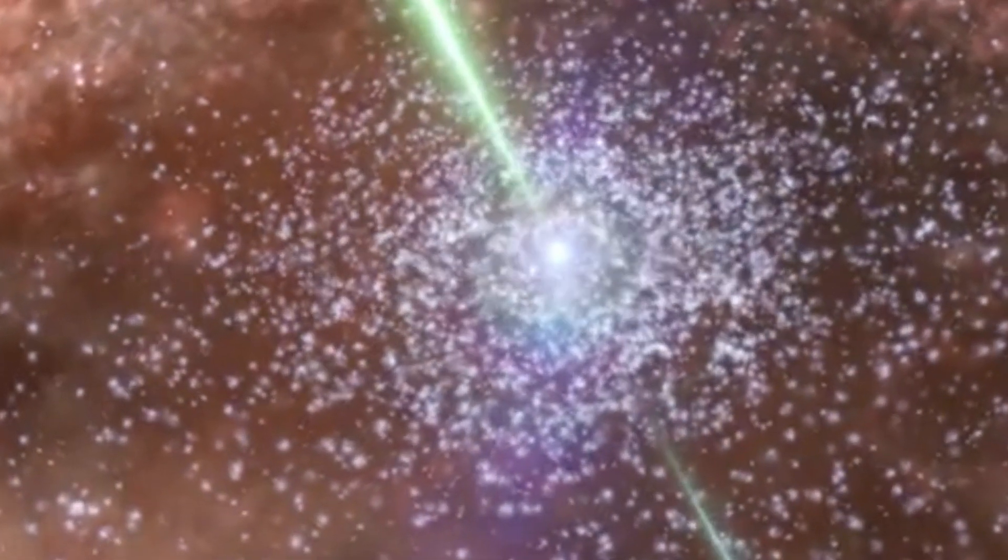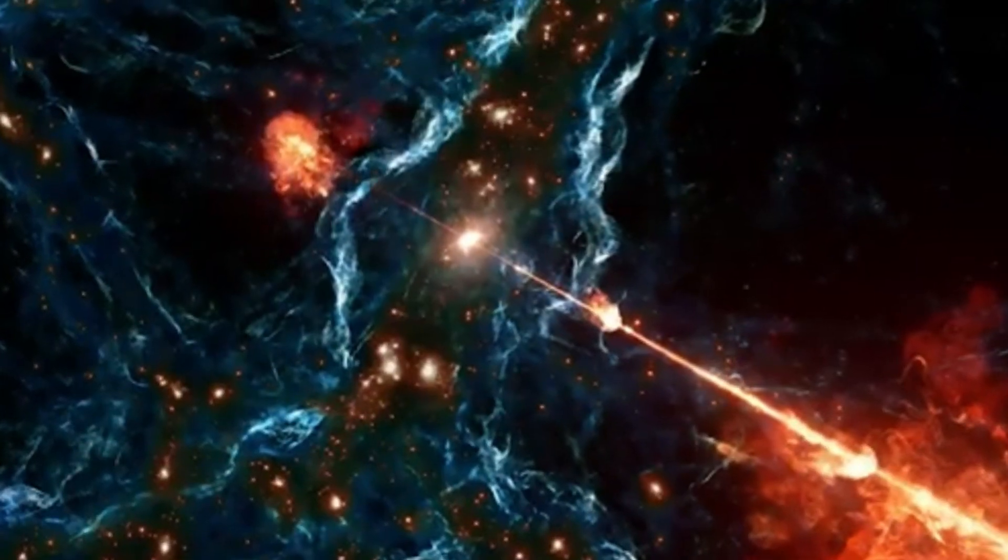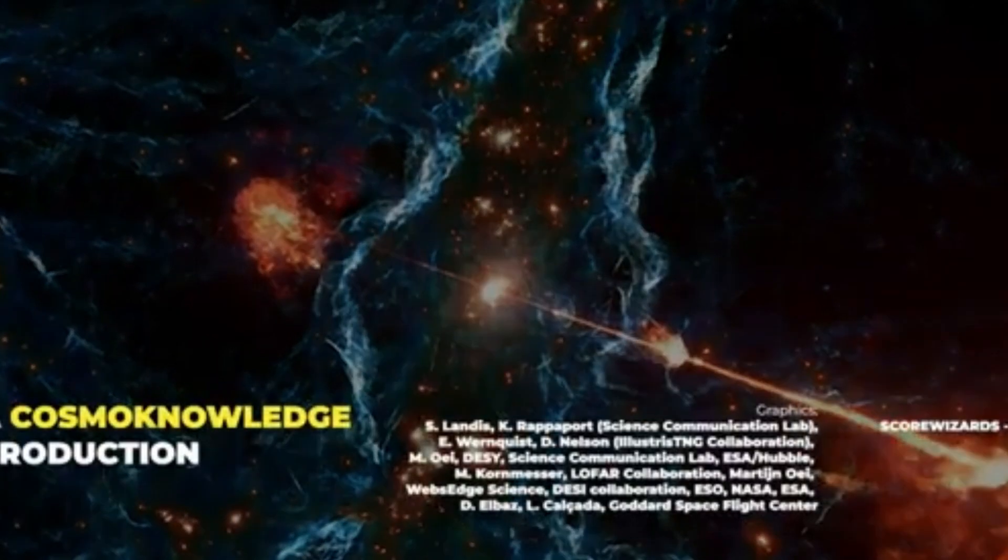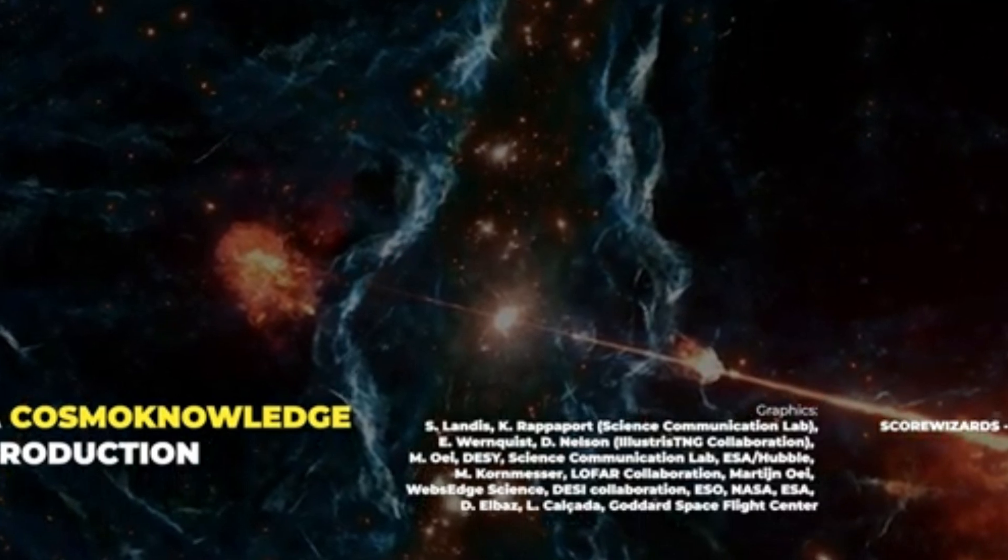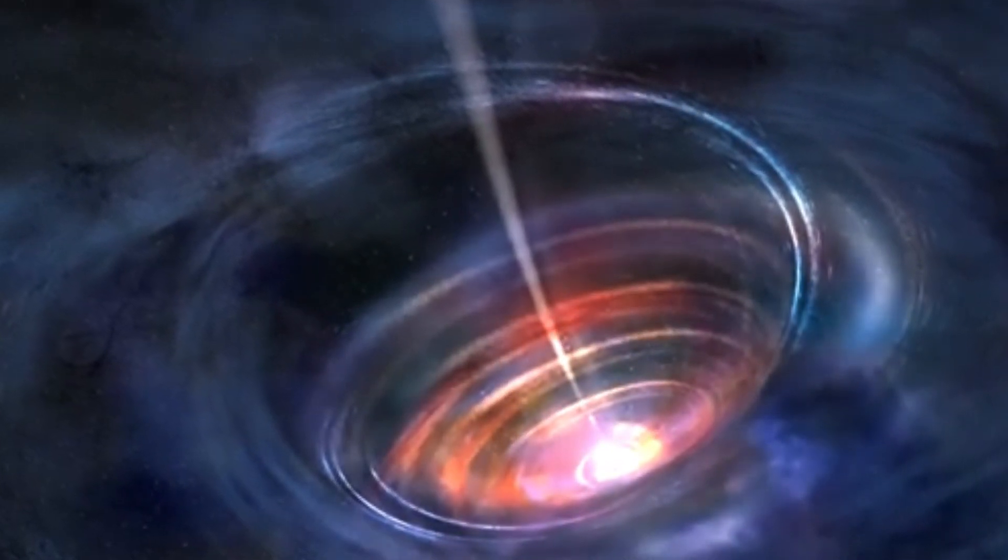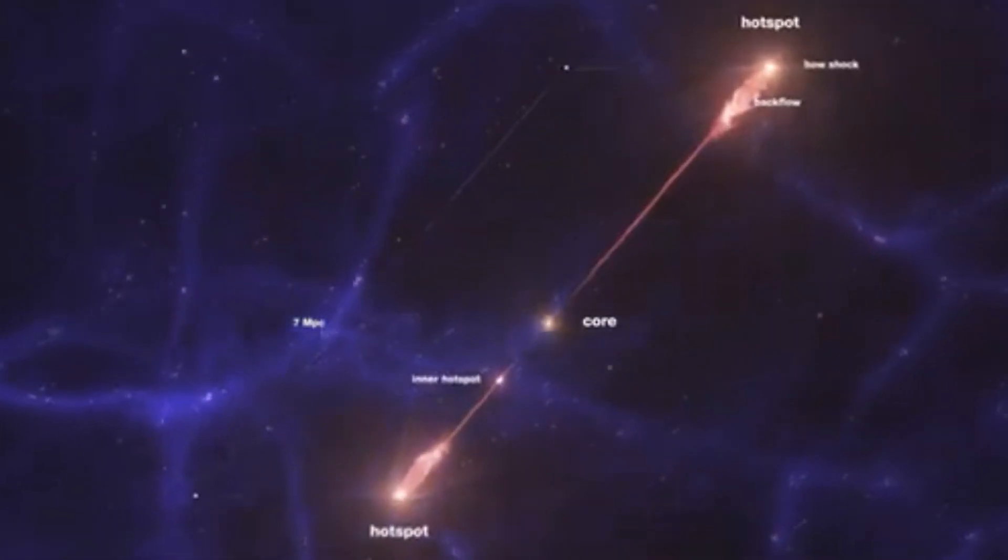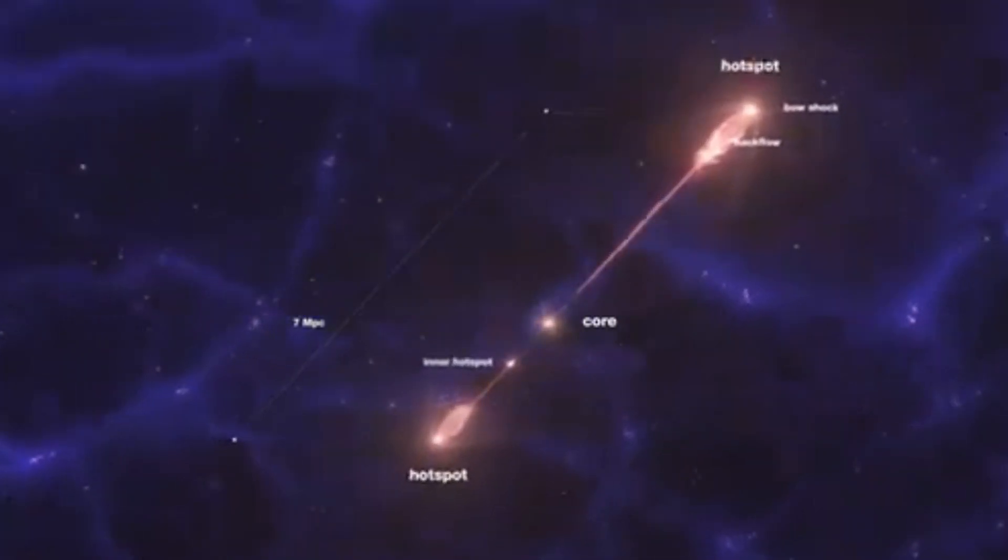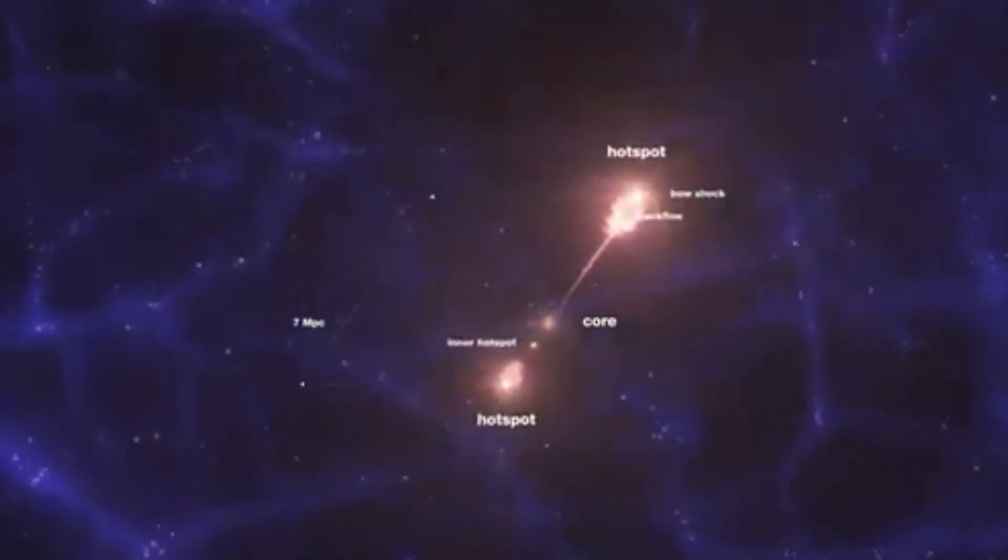Astronomers previously believed that giant jets like these were a rare phenomenon, but now we're starting to realize they might be far more widespread. And here's the kicker. What we found with Porphyrion might just be the tip of the iceberg. The LOFAR survey that uncovered this giant black hole jet has only covered about 15% of the sky. So what else is lurking out there? Astronomers believe there could be even bigger jets, even more powerful black hole systems that we haven't yet detected. The discovery of Porphyrion has opened the door to a whole new class of cosmic giants.